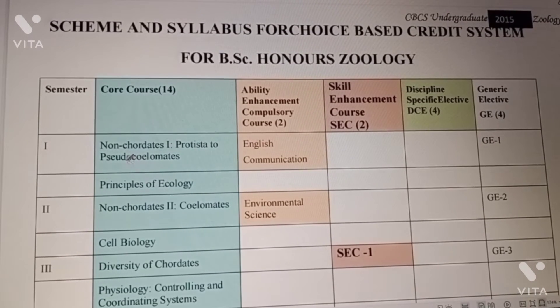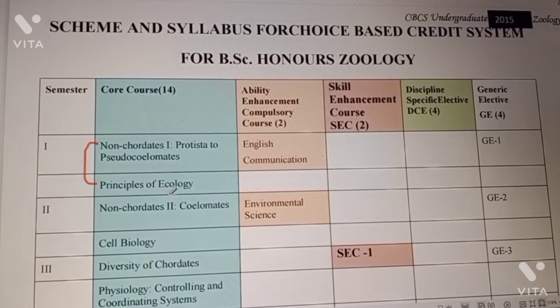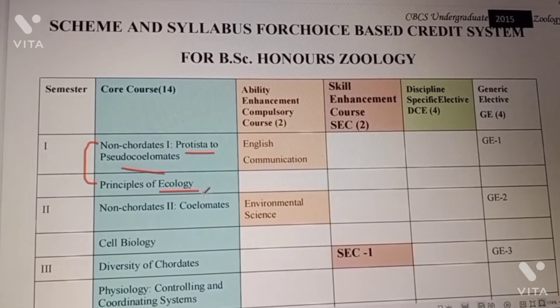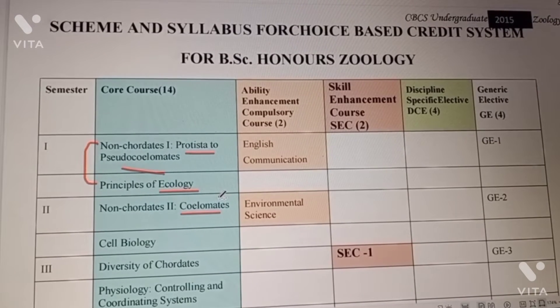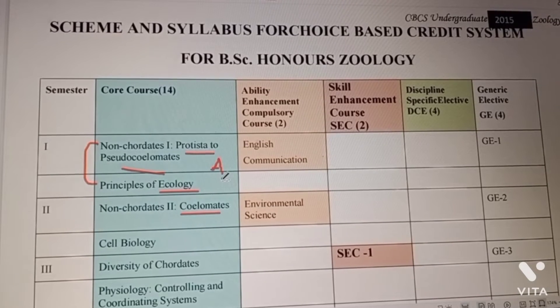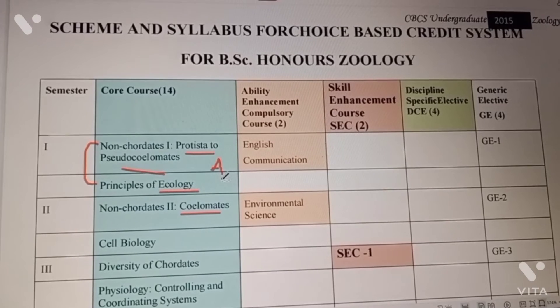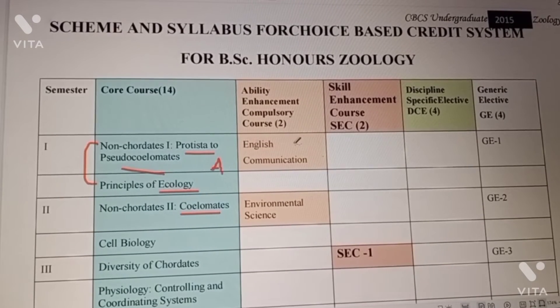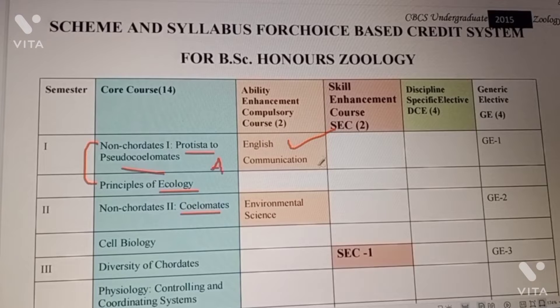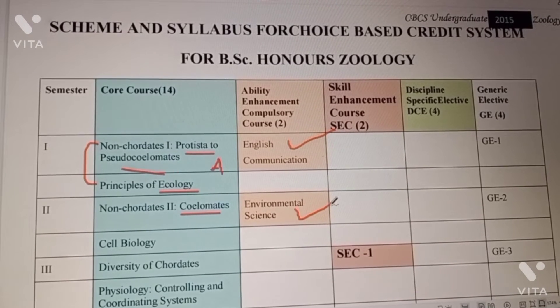Let's talk about syllabus quickly. First semester, we will study these two core subjects. Principles of Ecology and Non-chordates 1, Protista to Pseudocoelomates. In the ecology we will have different ecosystems like the 12th class that we studied. Then our ability enhancement will be a compulsory course, English or environmental science will be in second semester, but we can exchange in first semester EBS and second semester English.